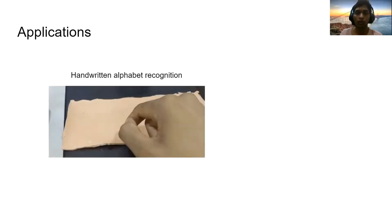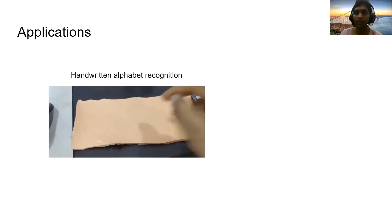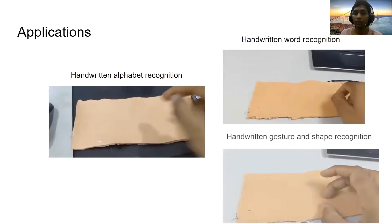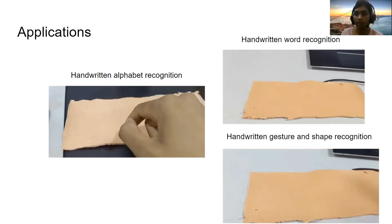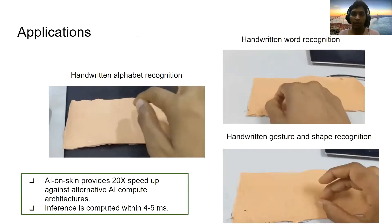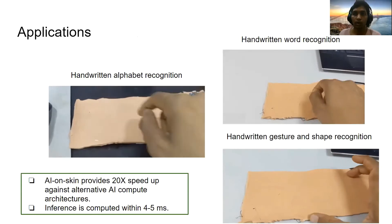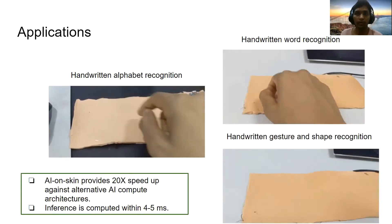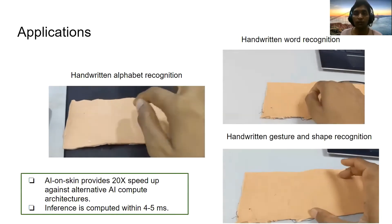We implemented three different applications: one was handwritten English alphabet recognition, the other one was handwritten four-letter word recognition and the other one was handwritten gesture or shape recognition. AI on skin provides an average of 20x speedup against off-body Bluetooth and on-body centralized computer architecture and for all the three applications, the inference is computed within four to five milliseconds.